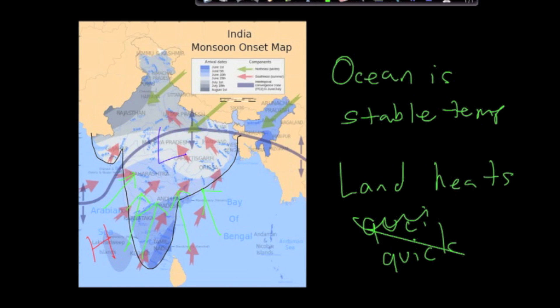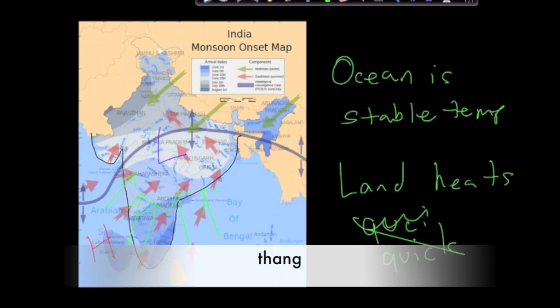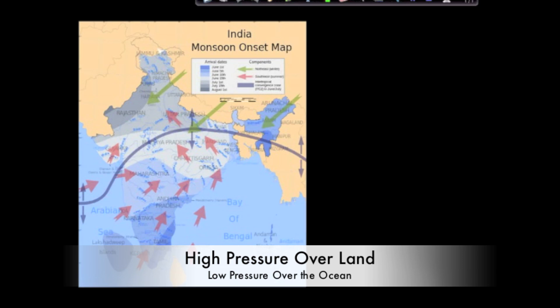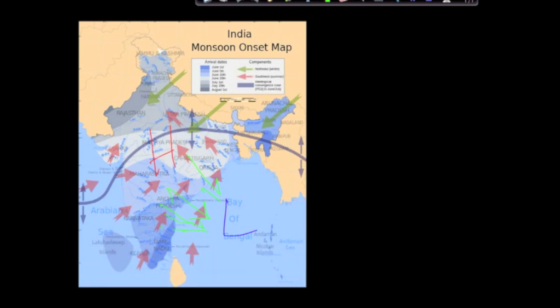In the winter, the opposite happens. You're going to have high pressure over the land and low pressure over the ocean. Those winds reverse direction because the land cools off more quickly in the winter than the ocean. That changes the pressure situation, creating high pressure over land and low pressure over the ocean, so the wind switches directions.